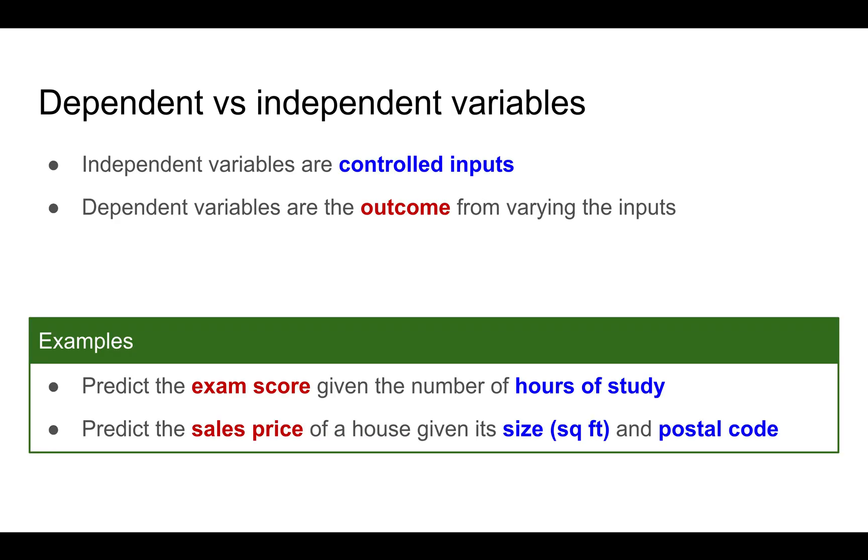What's the difference between dependent versus independent variables? You can think of independent variables as things you can control, inputs that you control, whereas dependent variables are the outcome or response that you get when you vary these inputs. For example, if you change the number of hours of study, you expect the exam score to be changed as an effect from that. Or if you increase the size of the house or change the postal code where it's located, you expect the sales price to also be affected.